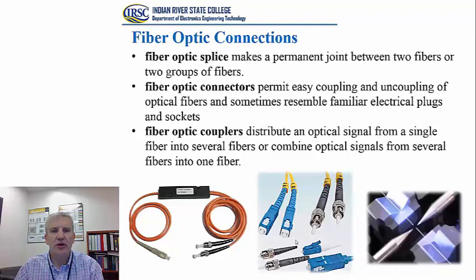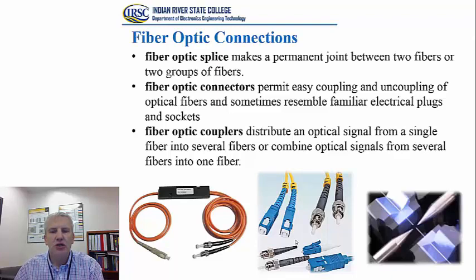The following slide briefly describes each of the three types of fiber optic connections. In the case of a fiber optic splice, we are talking about a permanent joint established between two fibers or two groups of fibers — bare fiber on one side, bare fiber on the other, merged into a permanent joint. In the case of fiber optic connectors, we are talking about a joint that does not have to be permanent. Two connectors mate into each other and can also be disconnected. Fiber optic connectors enable easy coupling and uncoupling of optical fibers and sometimes resemble familiar electrical plugs or sockets.